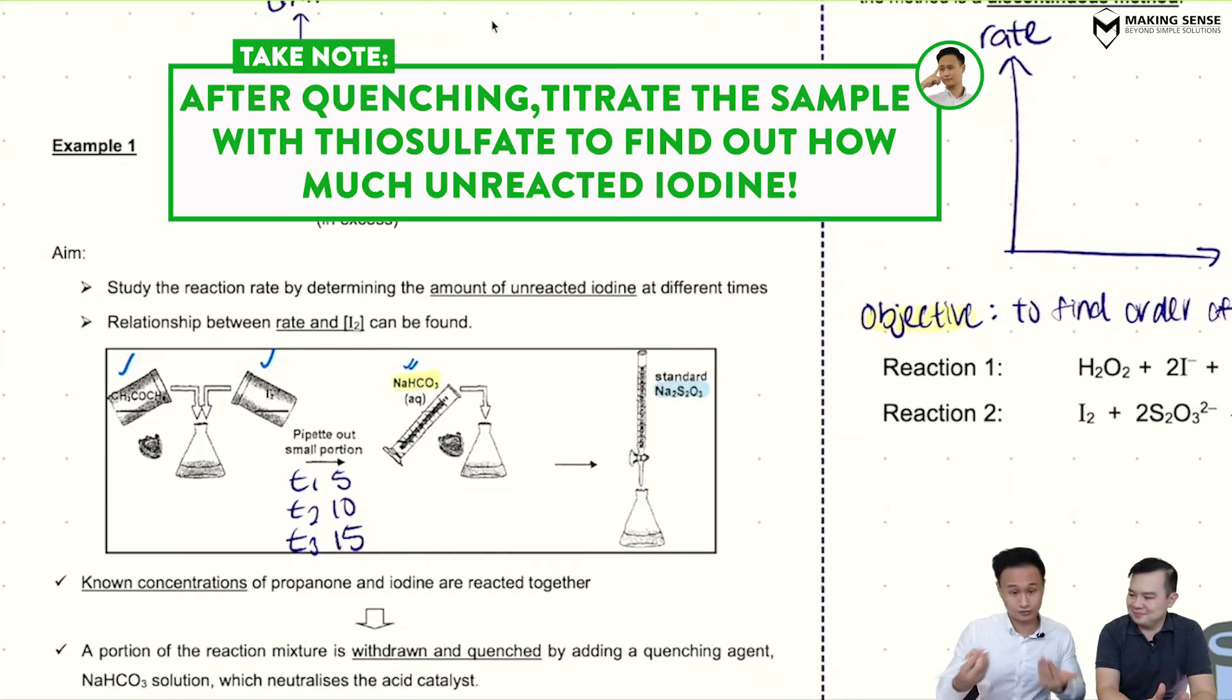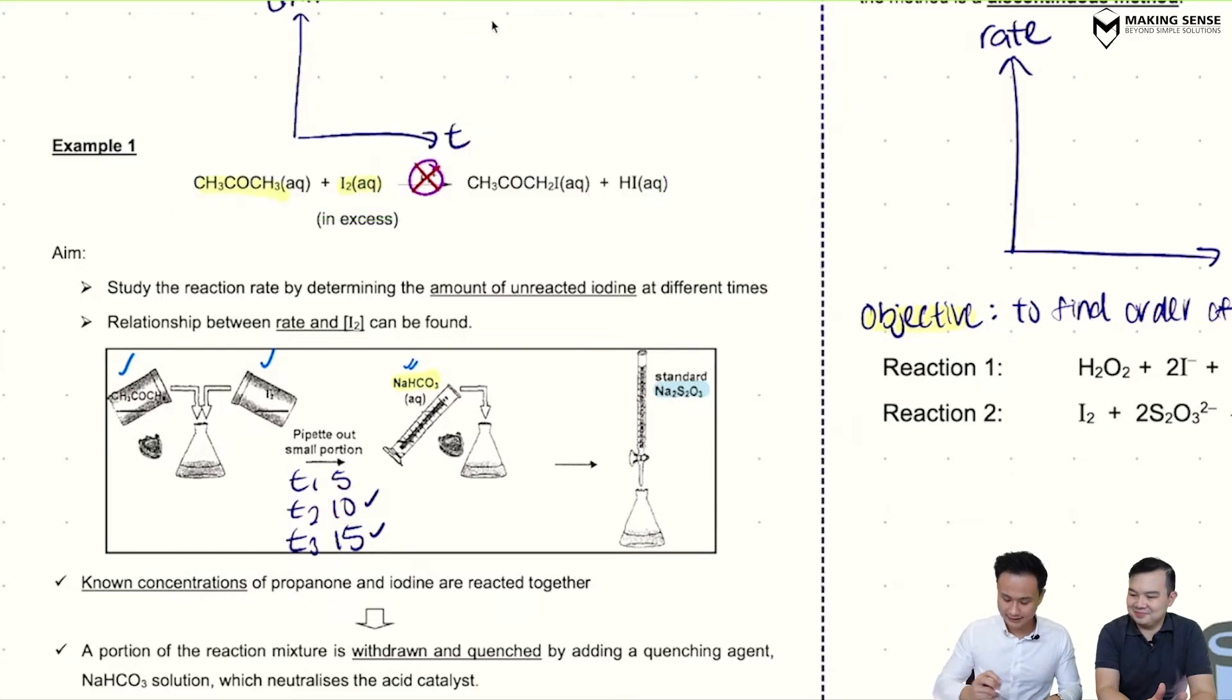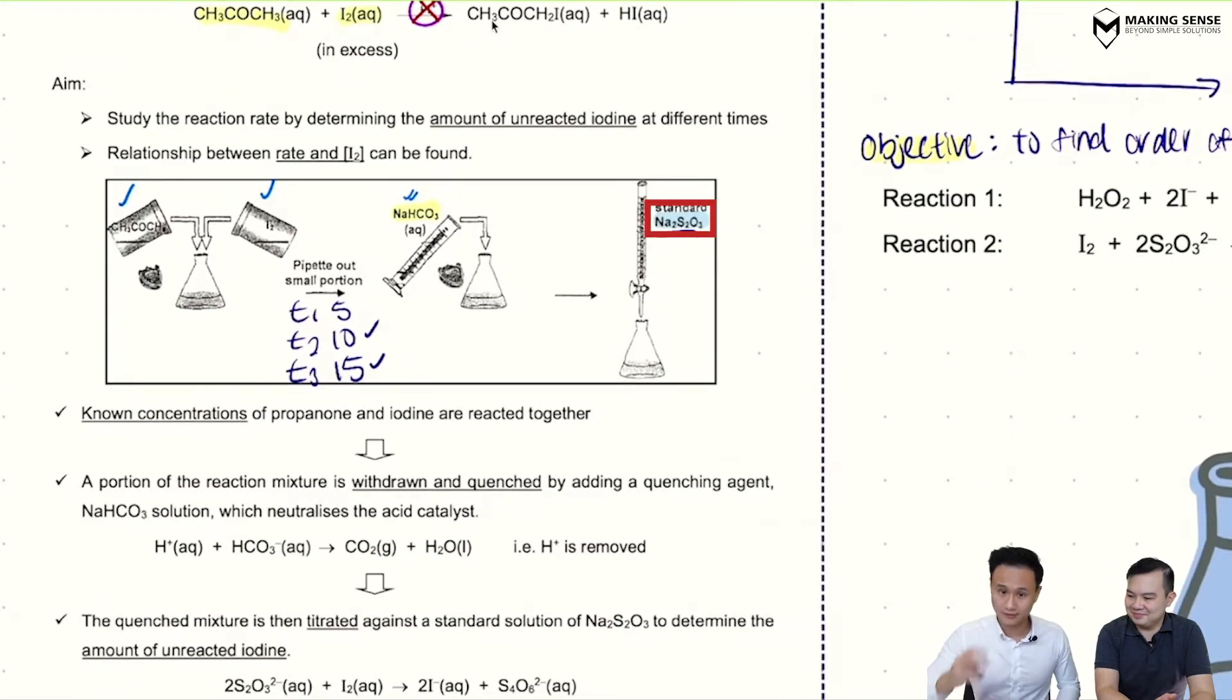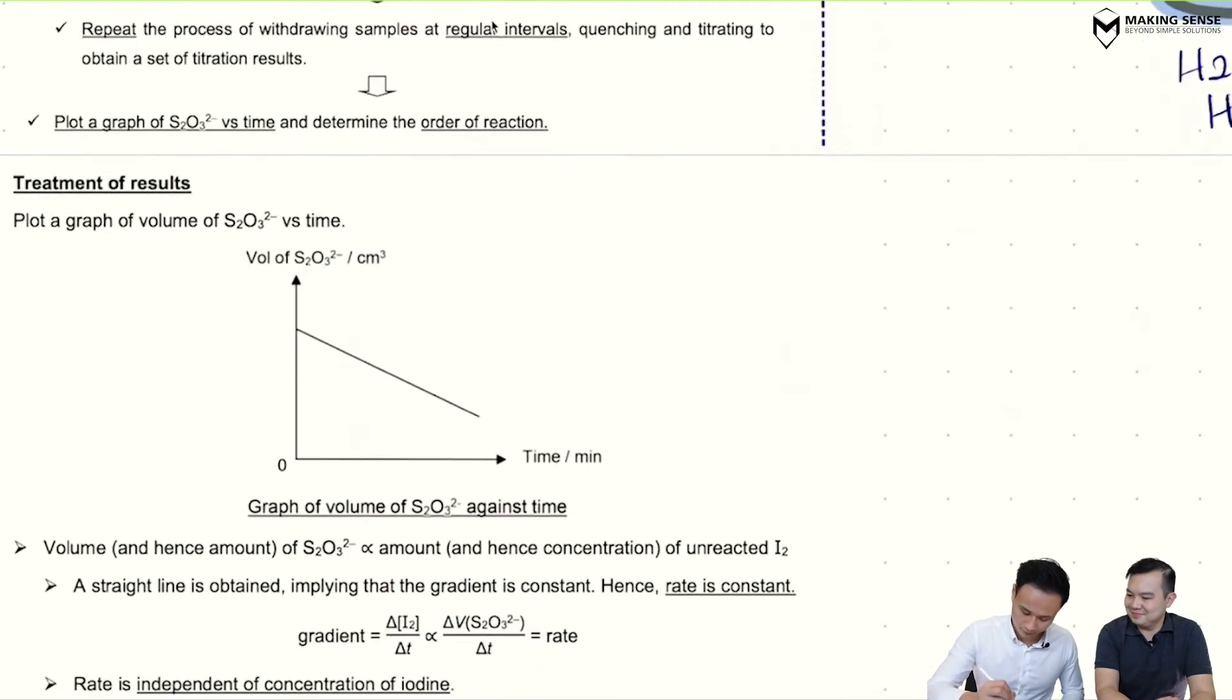And then from there, I can find out how much unreacted iodine I have by a simple iodine-thiosulfate titration. So from this, I can do this a couple more times. So at 10 seconds, at 15 seconds. And what I will do now is this. I'll plot the volume of thiosulfate used for each time regular interval. And you see this here. Volume of thiosulfate against time. So for example, 5 seconds or 5 minutes in this case, 10 minutes, 15 minutes.